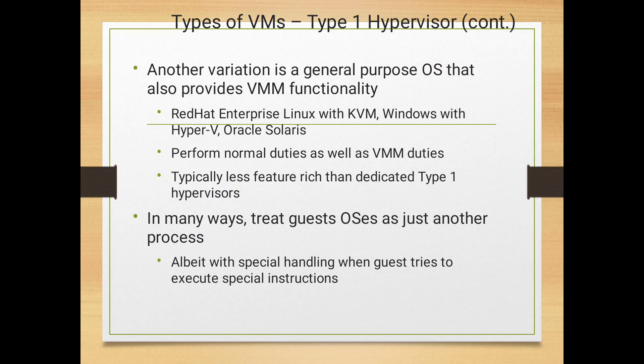Another variation of Type 1 is a general-purpose OS that also provides virtual machine functionality. It performs its normal duties as well as virtual machine duties, but it is typically less feature-rich than a dedicated Type 1 hypervisor. In many ways it treats the guest OS as just another process.